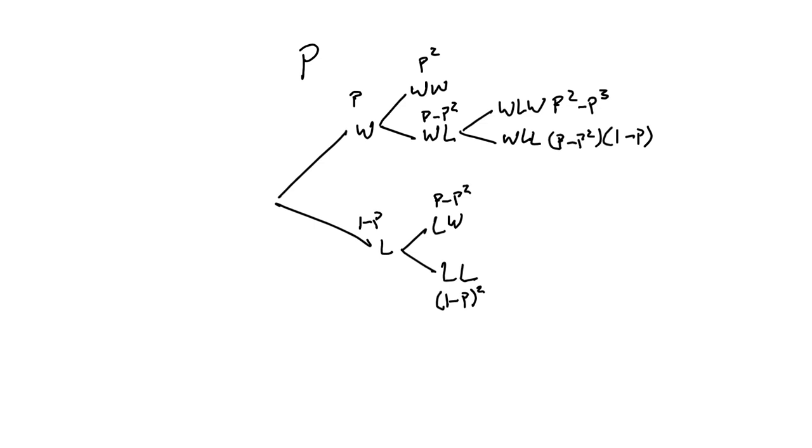And if they lose and then win, we are interested in continuing here. They can lose, win, win, or they can lose, win, lose. And if they lose, win, win, we just take this and multiply it by P. Again, it's the same as win, lose, win. It's P squared minus P cubed. And loss, win, lose, again, it doesn't really matter. It's not going to be in our calculation, but that's P minus P squared times one minus P.